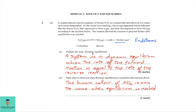Part one: explain the term dynamic equilibrium. A system is in dynamic equilibrium when the rate of the forward reaction is equal to the rate of the reverse reaction. Part two: state what is observed when dynamic equilibrium is reached in the reaction above.